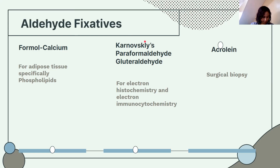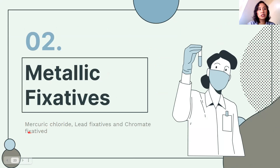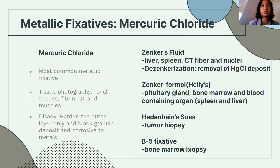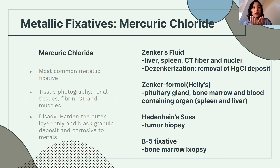Next are metallic fixatives: under this category we have mercuric chloride, lead fixatives, and chromate fixatives. The most common metallic fixative is mercuric chloride. Its disadvantages are that it hardens the outer layer, produces a black granular deposit artifact, and is corrosive to metals. It is used for tissue photography.